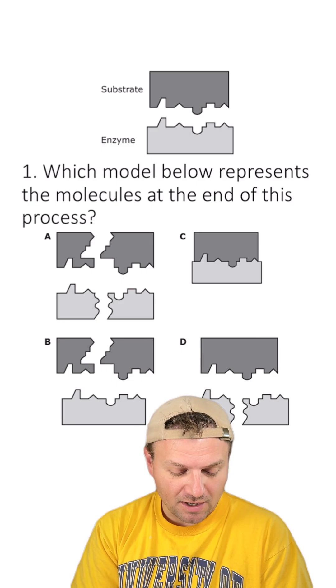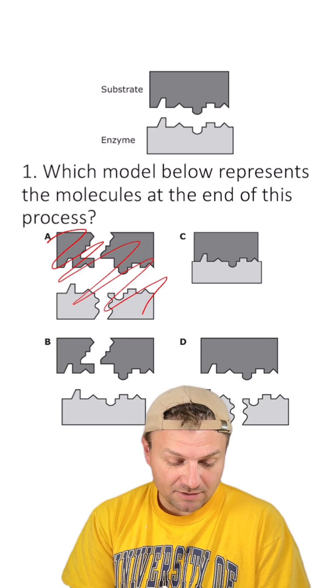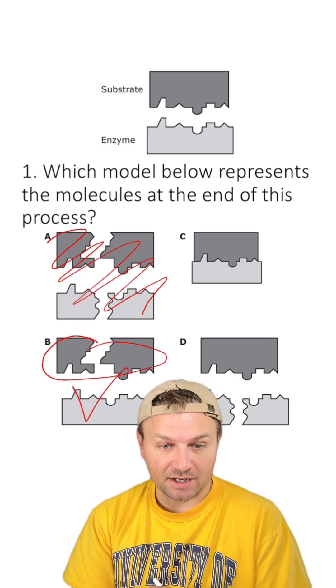Let's take a look at the answers. A, you can see that both the substrate and enzyme are broken down. This one's wrong. B, the substrate's broken down, but the enzyme's not. This looks like our answer.